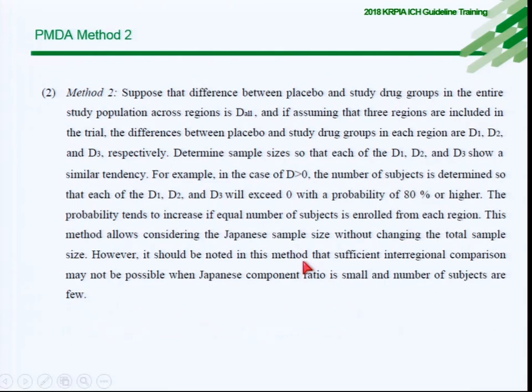PMDA Method 2, in short, means that if the global trial has already shown a positive result, then in different regions — pre-defined in the protocol — the treatment effect in all regions must be in the same direction. For example, the hazard ratio must be less than one for every region. In China, Method 1 is most commonly applied, not Method 2.